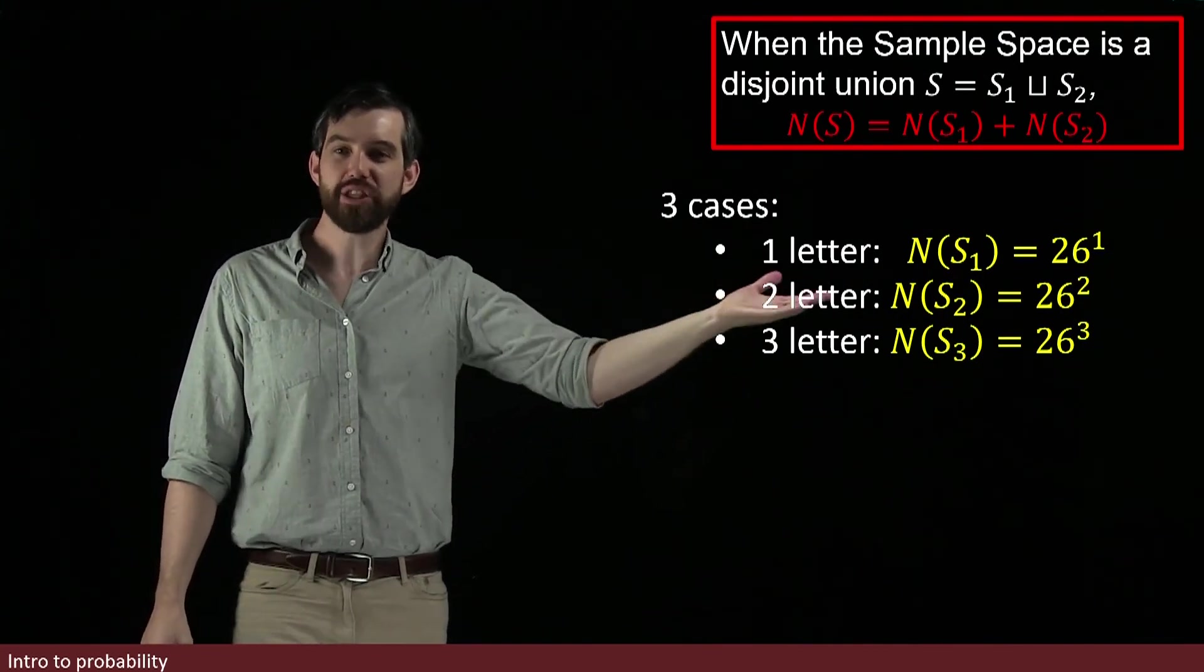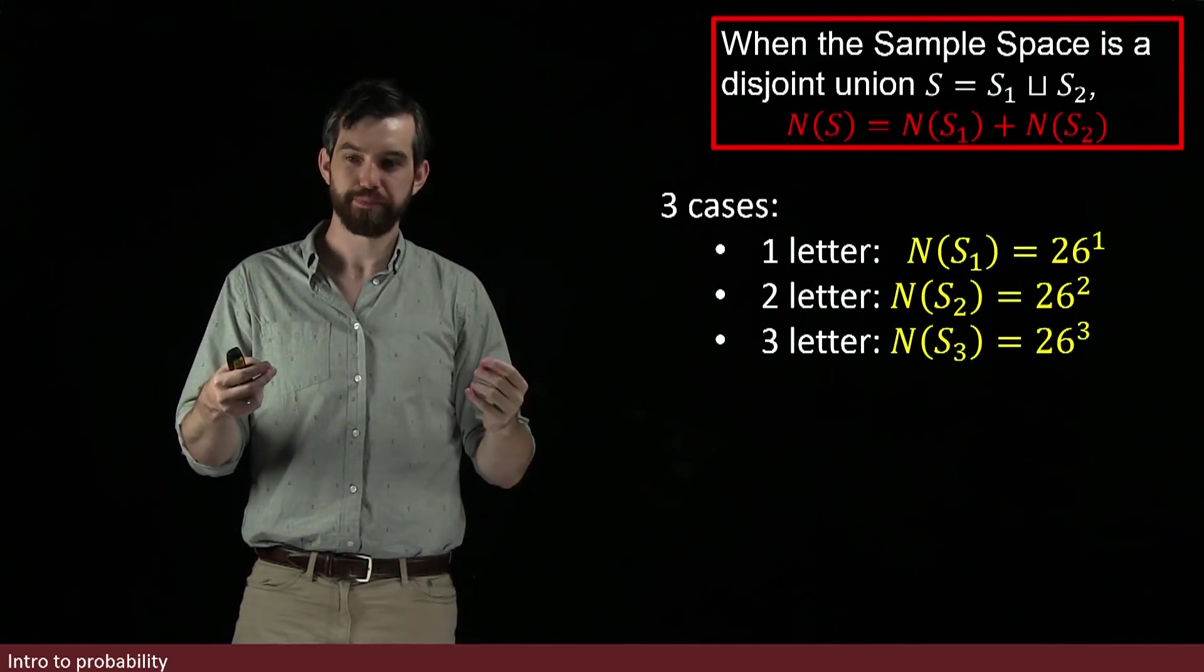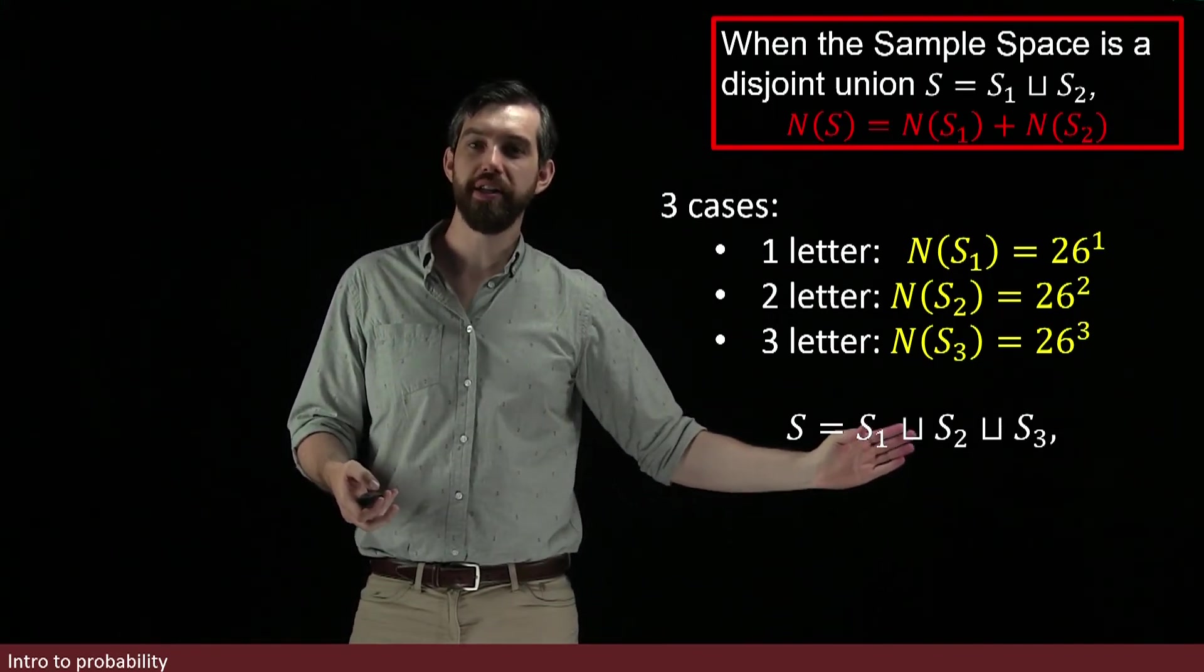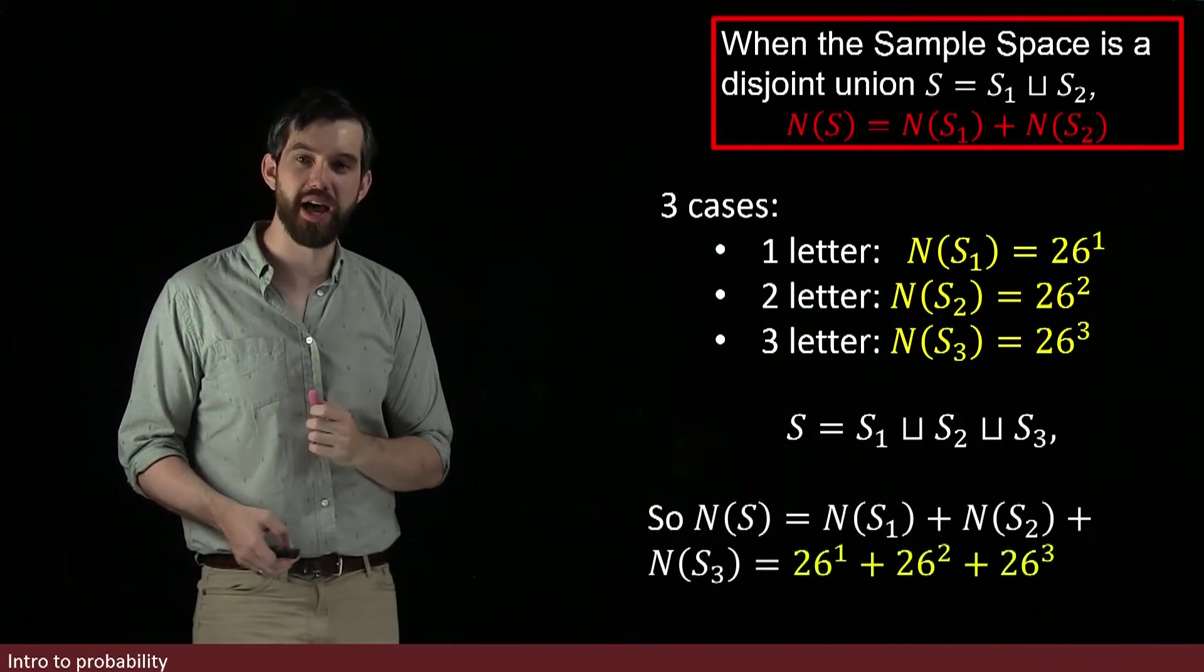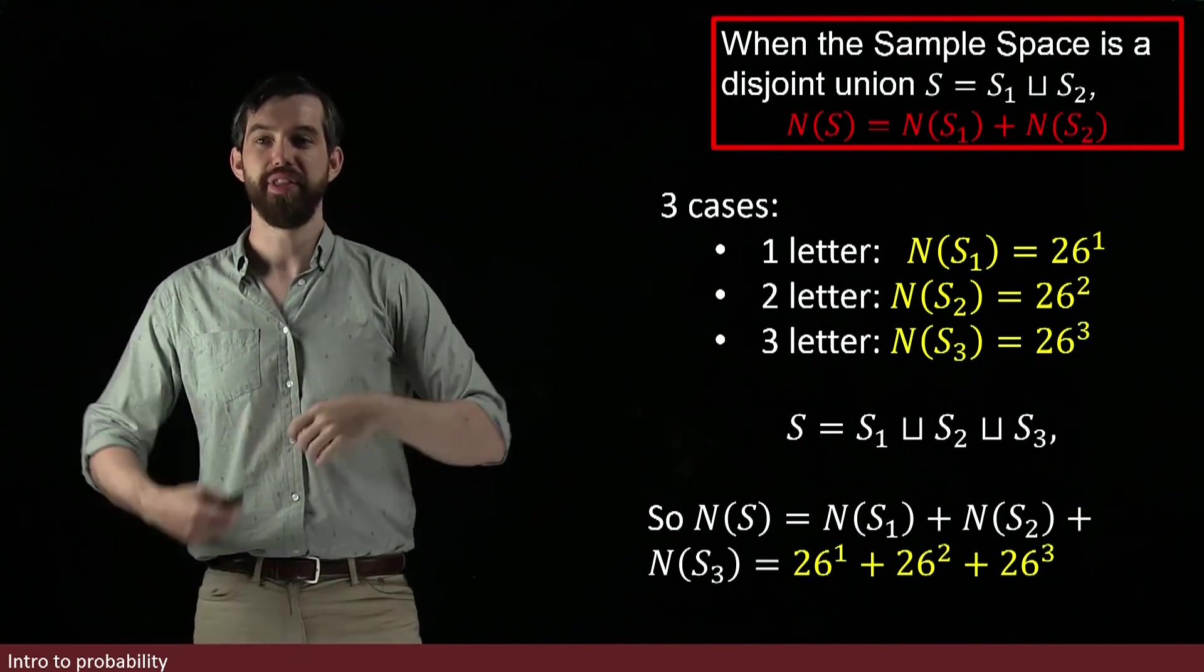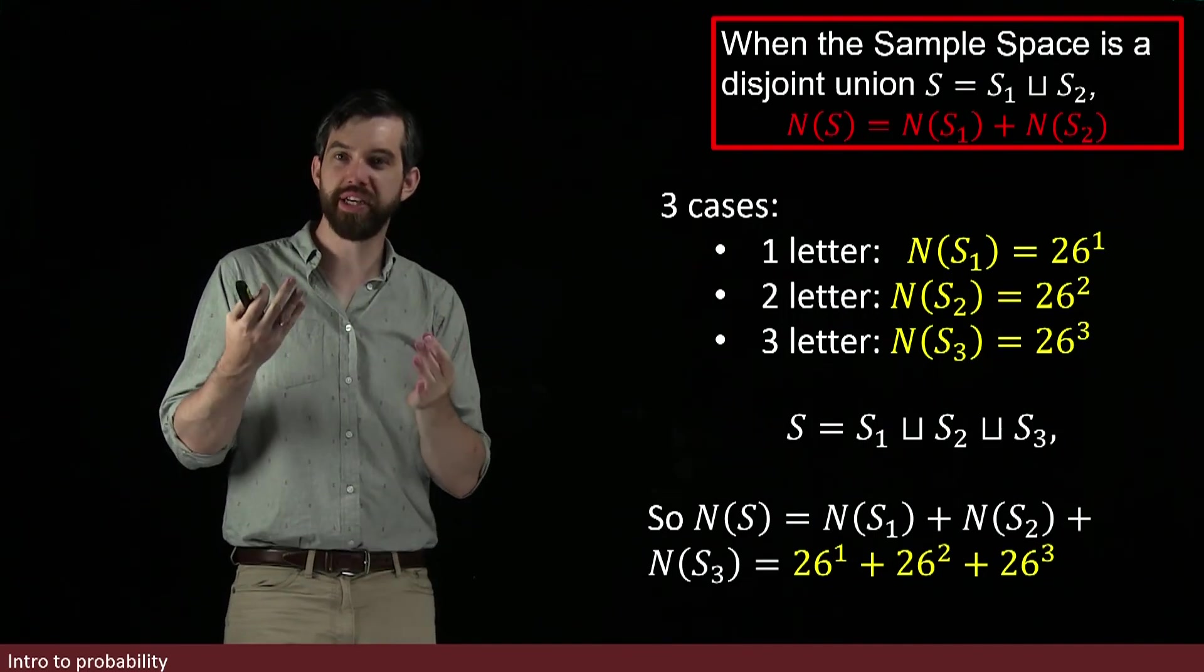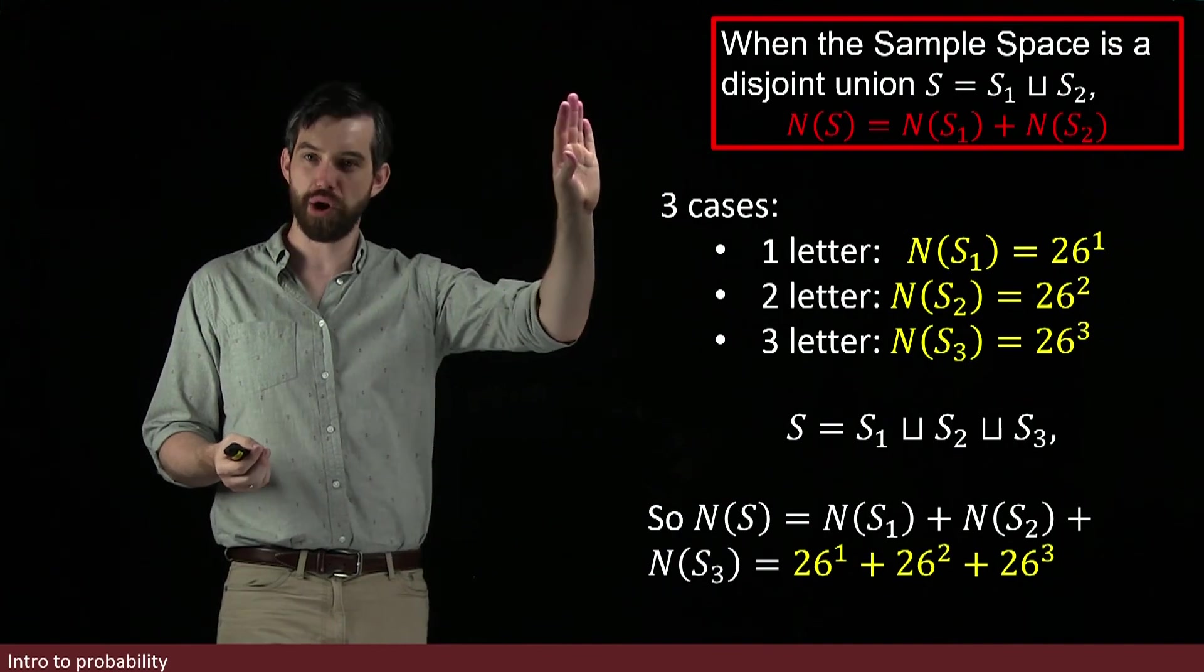So these three, S1, S2, S3, these three sub-sample spaces are going to be disjoint. And so in the nomenclature of our disjoint union, we can say that our total sample space is S1 disjoint union S2 disjoint union S3. And by the formula, I can say that the total number is the sum of those three things. The N of S1, the N of the S2, the N of the S3, and that is precisely what we computed out before. So in other words, the logic that we saw in this password example, it generalizes into this larger property.